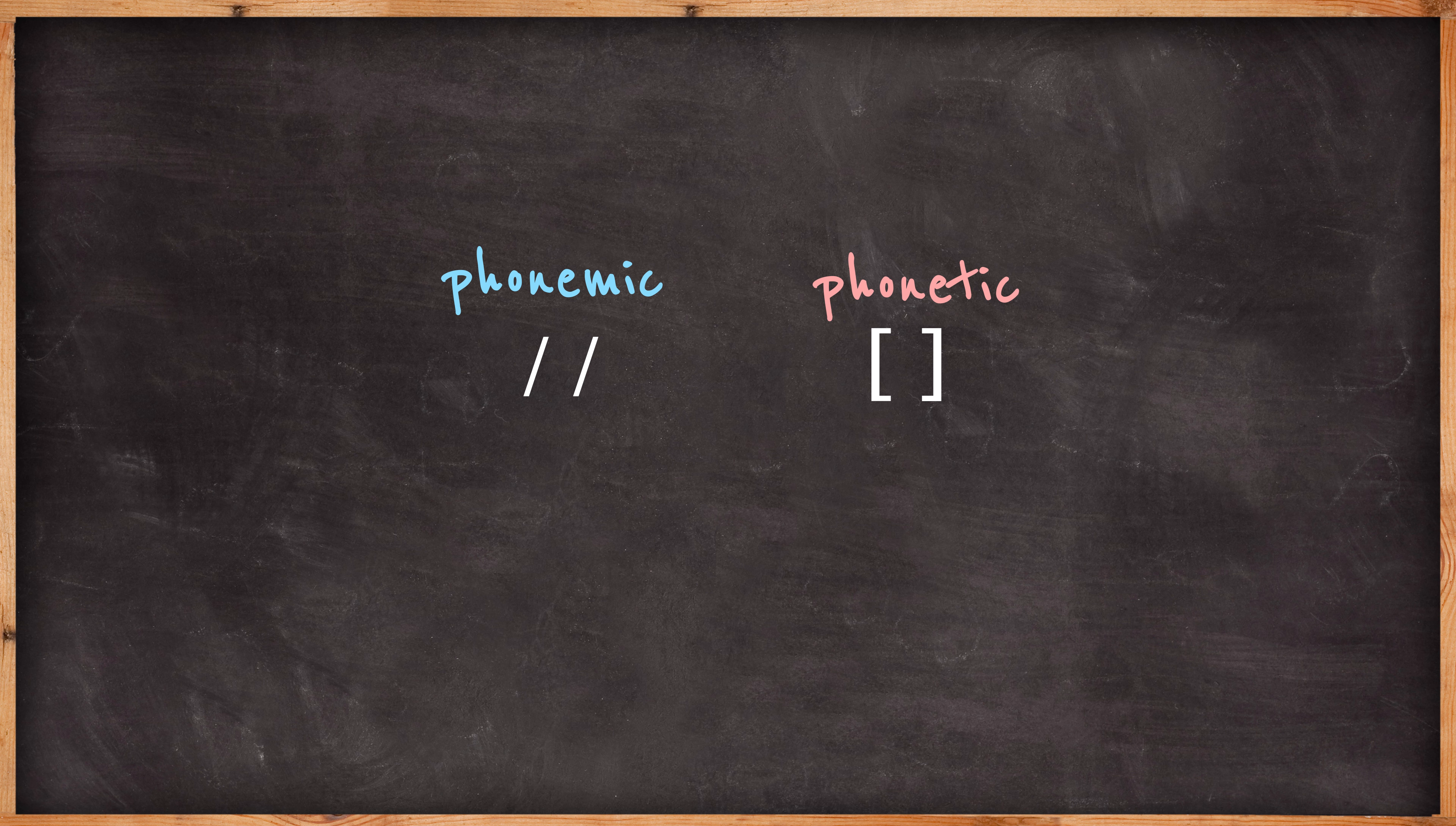Some dictionaries use different lines for their phonemic transcriptions, such as brackets or vertical bars, but we'll use the slants in this lesson.